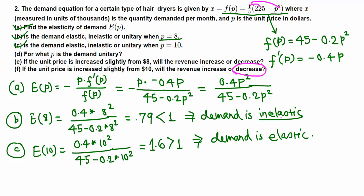At p = 8 the demand is inelastic, so if the price is increased a little bit, the revenue increases. Now for part D, we find the price p at which demand is unitary. Unitary means E(p) = 1, so we set E(p) equal to 1 and solve for p.